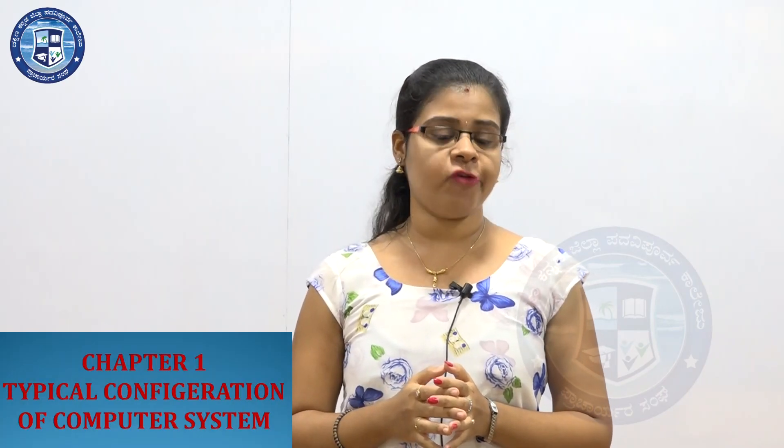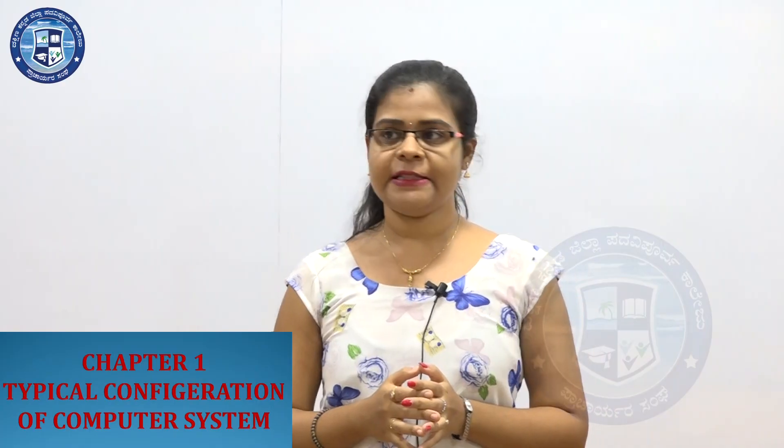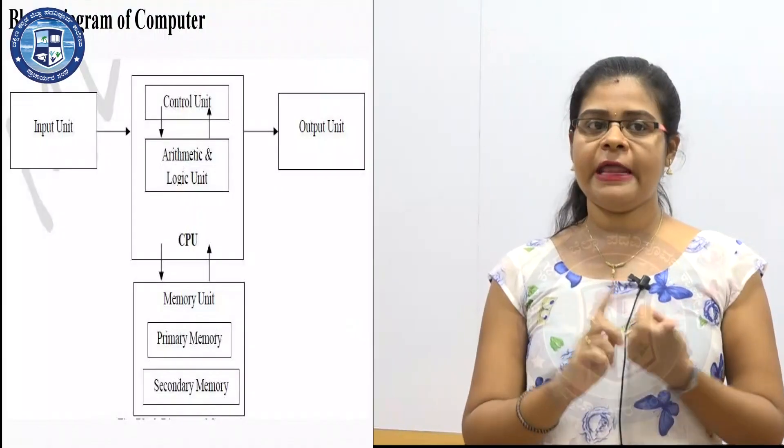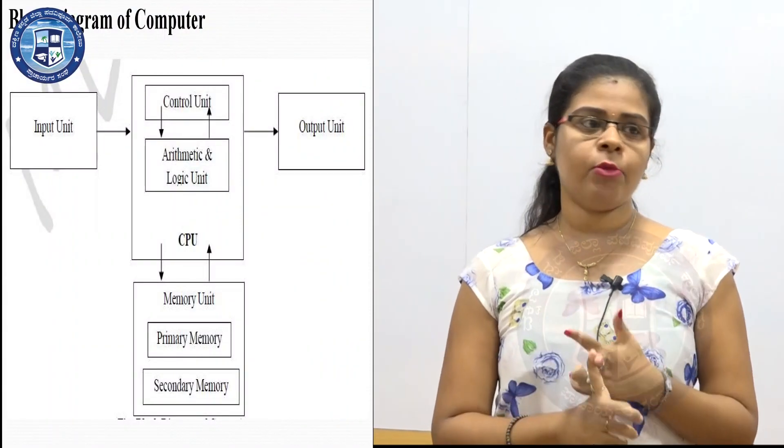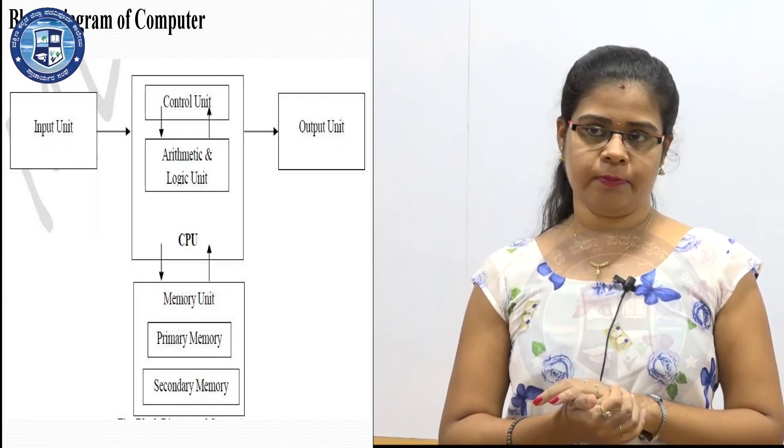Today we will be dealing with the first chapter: typical configuration of computer system. First, we shall recall what we studied in first PU — the block diagram of the computer. A computer is designed using four units: input unit, central processing unit, memory unit, and the output unit.